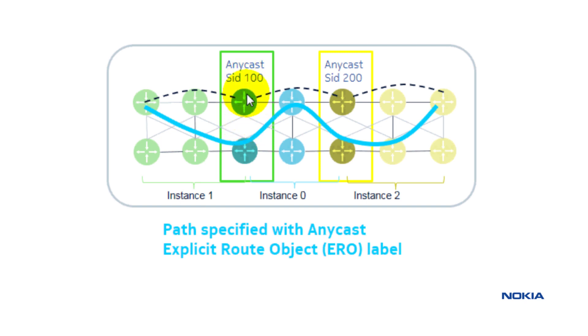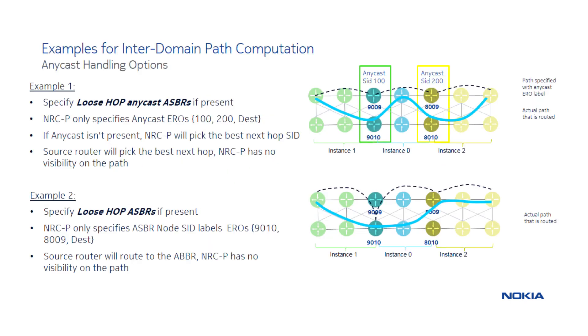If the anycast SIDs are not available, we fall back to the loose hop. So option 1 here specifies loose hop anycast ASBRs.